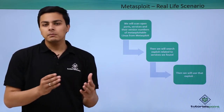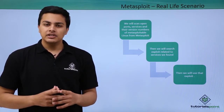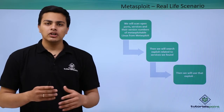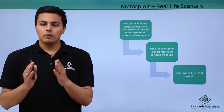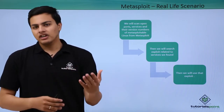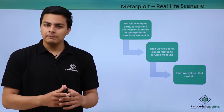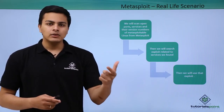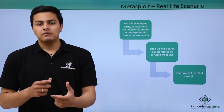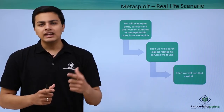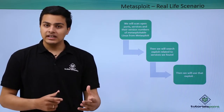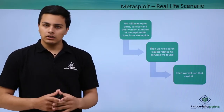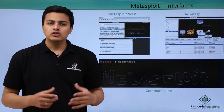Now let's discuss the Metasploit real-life scenario — how penetration testers use Metasploit in real time to penetrate systems. There are three steps: first, find open ports, services, and their version numbers running on a remote system. Once you have the version number, search the Metasploit framework database for a corresponding exploit. If that exploit exists in the database, use it to exploit the system. This is the real-life scenario every penetration tester follows.